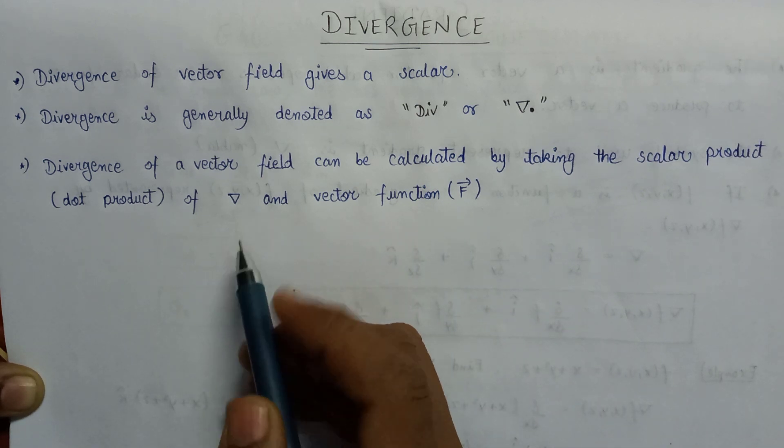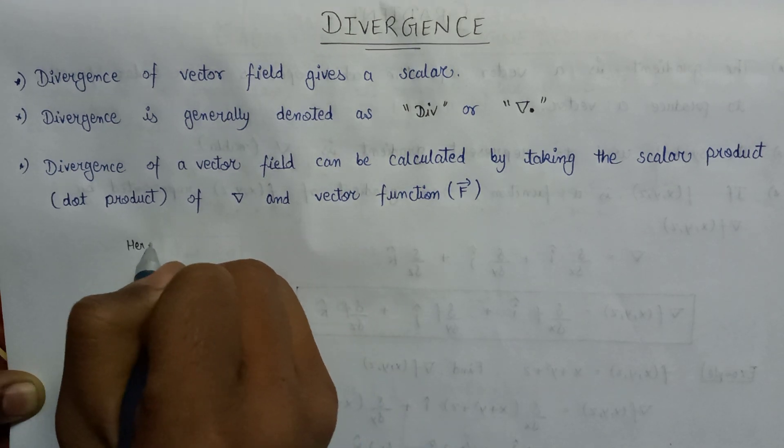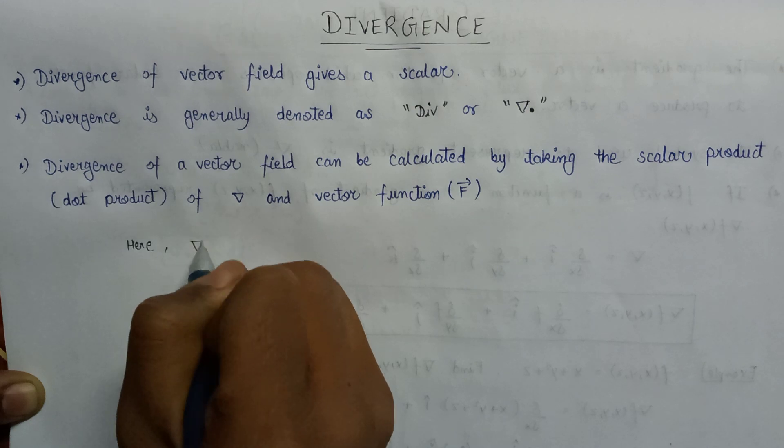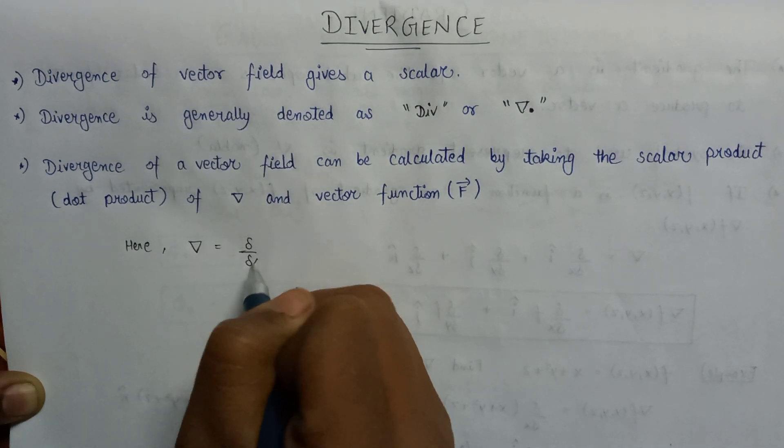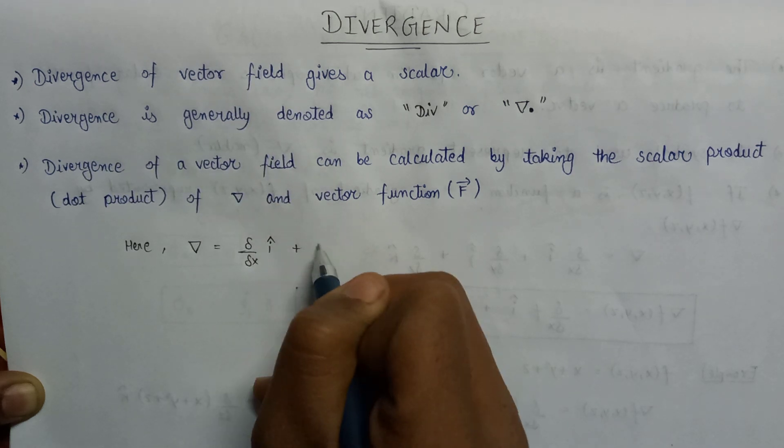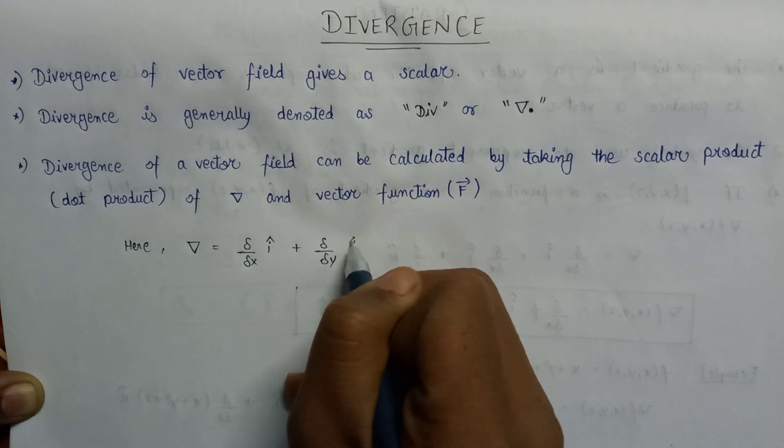Here, if we talk about the value of del, then del is equals to del over del x of i cap plus del over del y of j cap plus del over del z of k cap. This is the value for del.